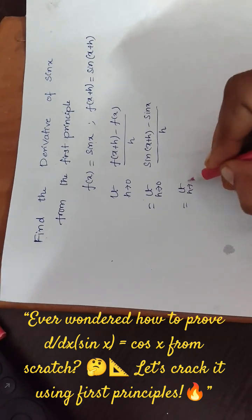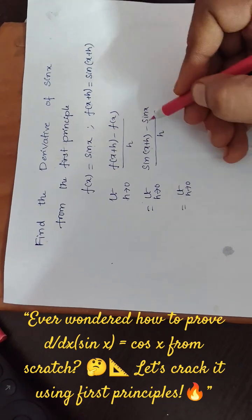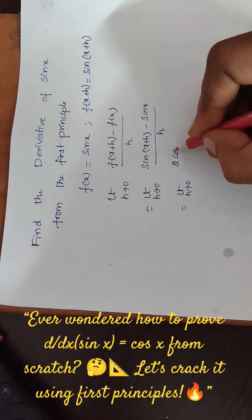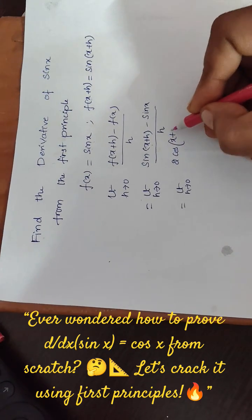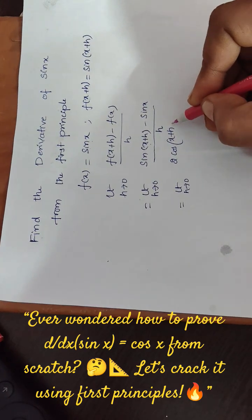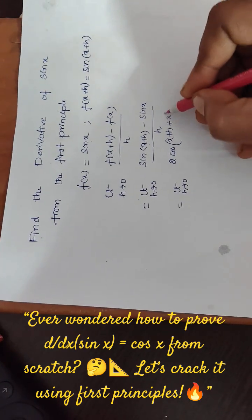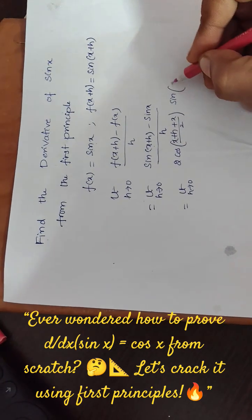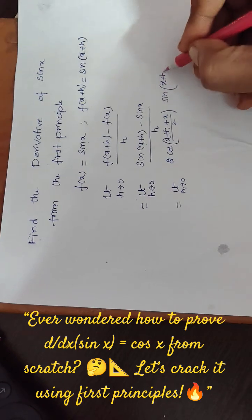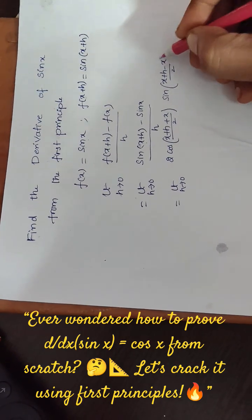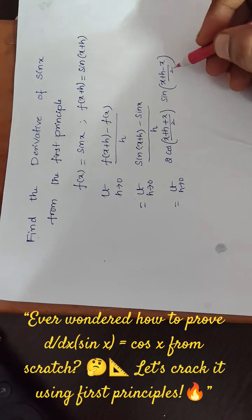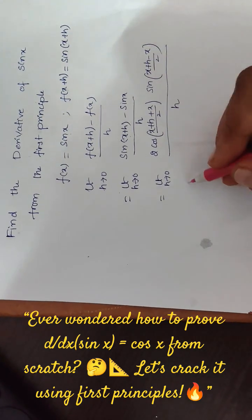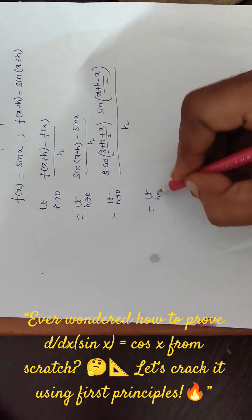So here, limit h tends to 0. This is in the form of sin c minus sin d. That means 2 cos of c plus d, that means c is x plus h plus x is d by 2, and sin of x plus h minus x by 2.